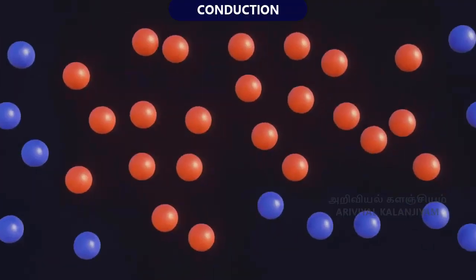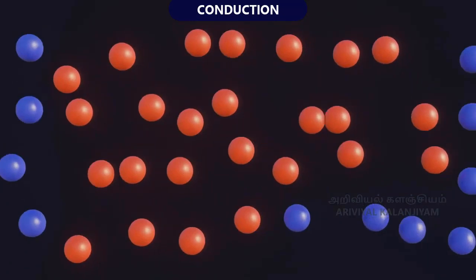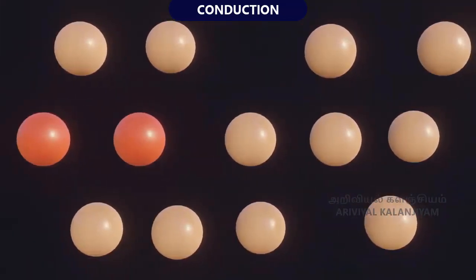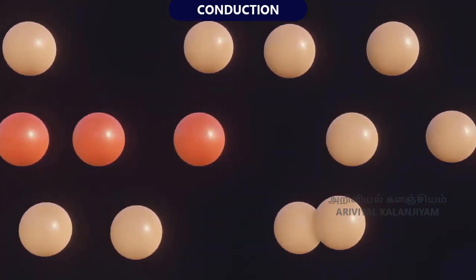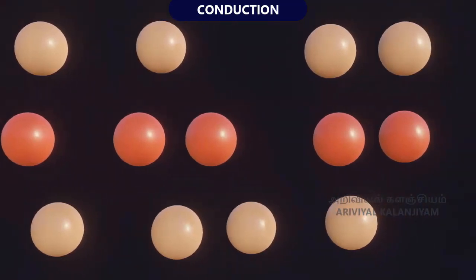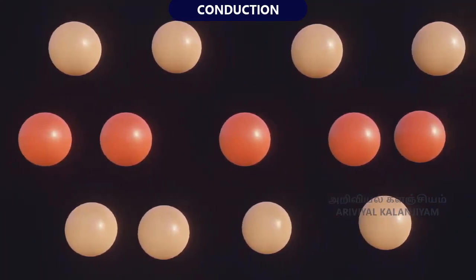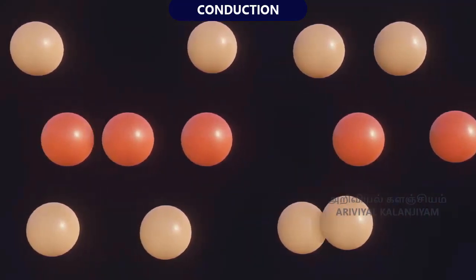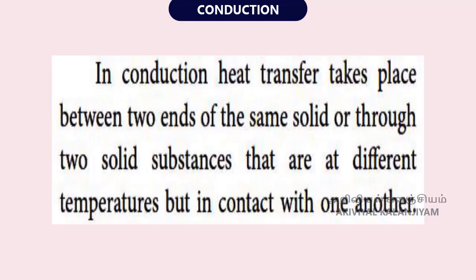In solid substances such as a silver spoon, atoms are arranged very closely. Hot water molecules which are vibrating transfer the heat energy to the atoms in the spoon and make them vibrate. Those atoms make other atoms vibrate, and thus heat is transferred through the other end of the spoon. In conduction, heat transfer takes place between two ends of the same solid, or through two solid substances that are at different temperatures but in contact with one another.